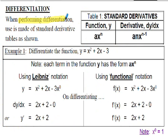When performing differentiation, engineers often make use of standard derivative tables. Table 1 shows a standard derivative table with one function: y = ax^n is the original function, and the derivative dy/dx is anx^(n−1). We showed this proof in the previous presentation using classical differentiation. For reference, the function y = ax^n is often referred to as a polynomial.